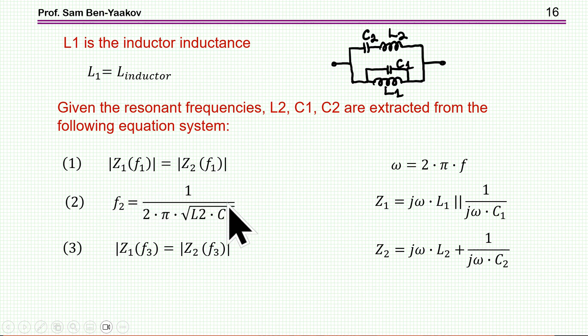We have the resonant frequency, and then we have the impedances that should be absolute value here, at F3, when Z1 and Z2 are defined here.